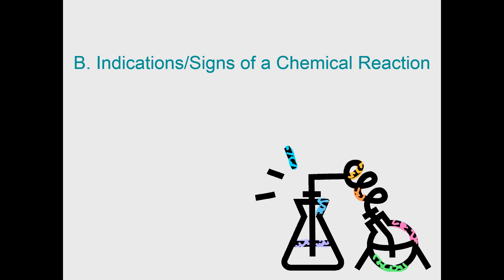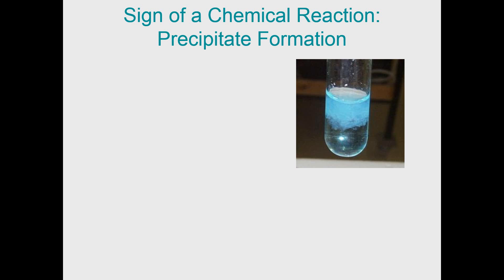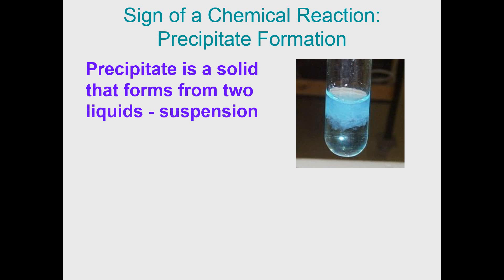The first thing we're going to talk about are some indications or signs of a chemical reaction. If you're doing a lab assignment and I asked you to identify the signs of a chemical reaction, one thing to look for is whether a precipitate is formed. A precipitate forms when two liquids react to form a solid — sometimes a cloudy, white, opaque substance. Opaque (O-P-A-Q-U-E) means you cannot see through it, and it's thicker than the original liquids.